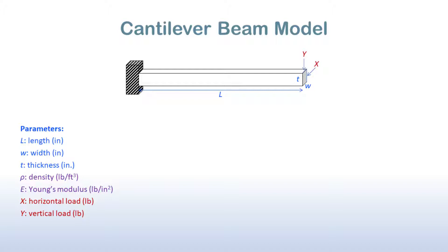And there are three output responses for our cantilever beam model: the mass of the beam, the stress on the beam, and displacement on the beam. For this problem, our goal will be to assess which of the input parameters most strongly influence each of the output responses.